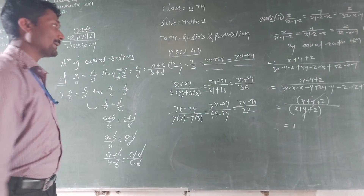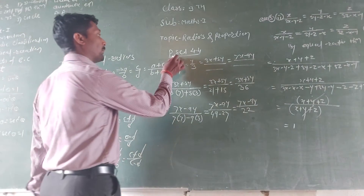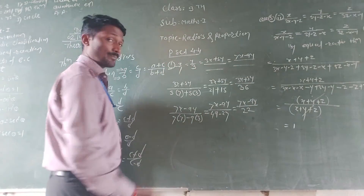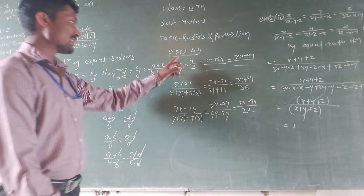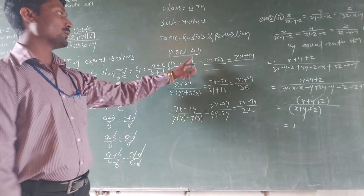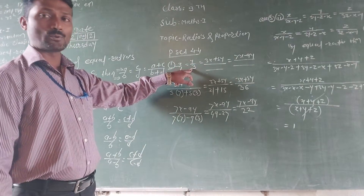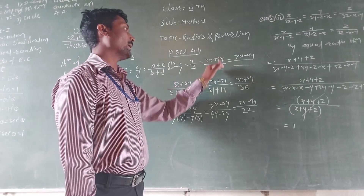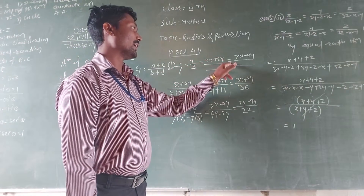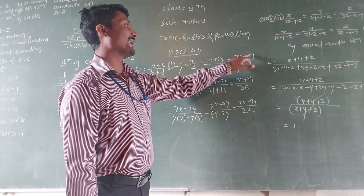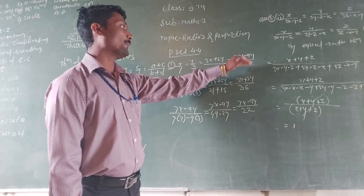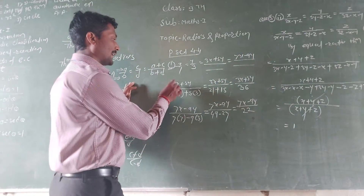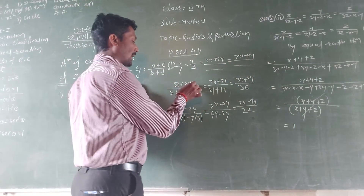For practice state 4.4, we have to fill in the blanks. Given x upon 7 equals y upon 3, in this theorem of equal ratio, what is 3x plus 5y upon what, equal to 7x minus 3y upon what?